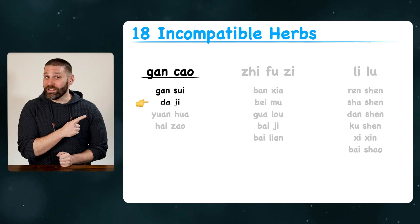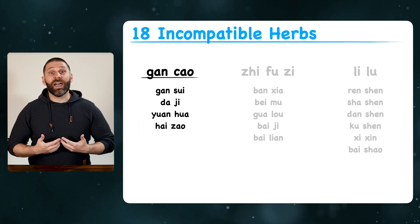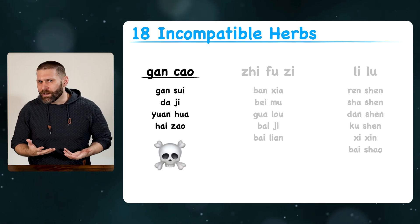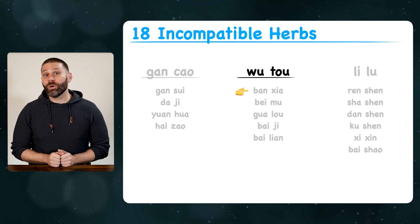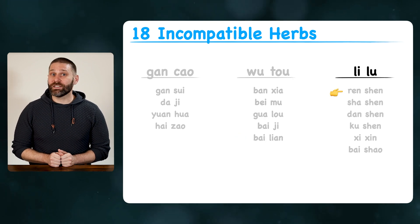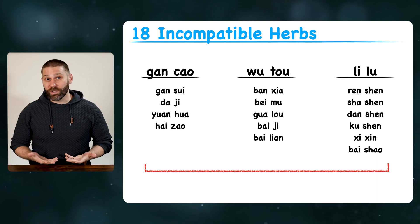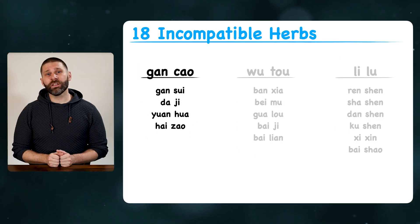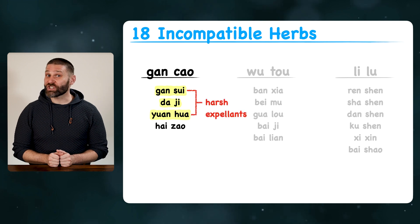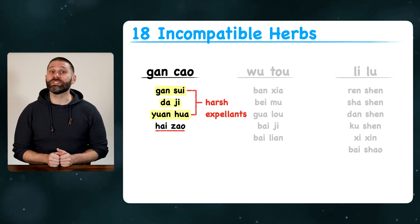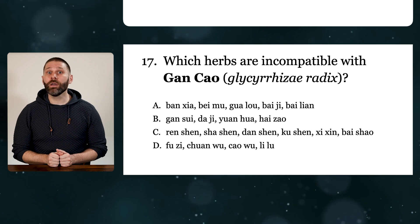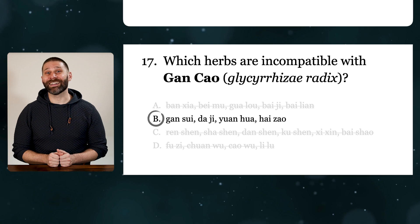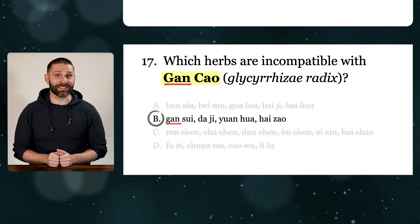Gansau is incompatible with these four herbs. If we combine Gansau with any of these herbs, it would create side effects that wouldn't be there if we used each herb separately. Notice that most of these herbs come from the harsh expellants category. The exception is Haitau, which is a seaweed from the transformed flooding category. But if you get a question about which herbs are incompatible with Gansau, pick the one with harsh expellants in it. You can maybe remember that Gan and Gan go together — so Gansau and Gansui.